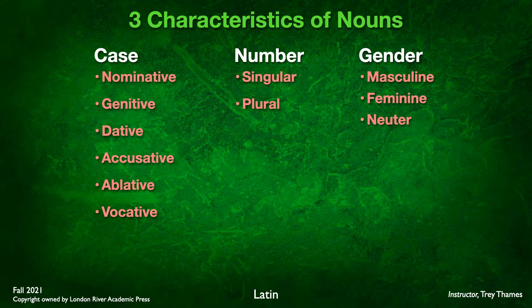There is actually another case — a seventh one. It's the locative case, and we'll talk more about that later, but it's rarely used, which is why it's not mentioned much. Just note that there is a seventh case, the locative, meaning location. But for right now, these six are the ones you need to worry about.